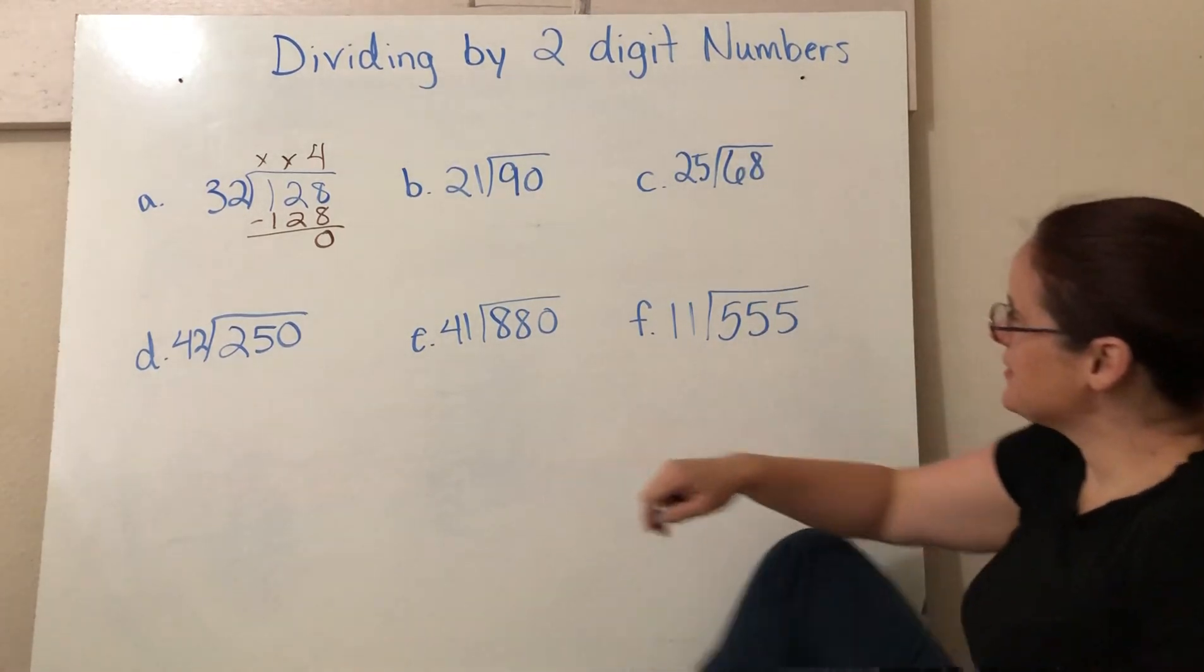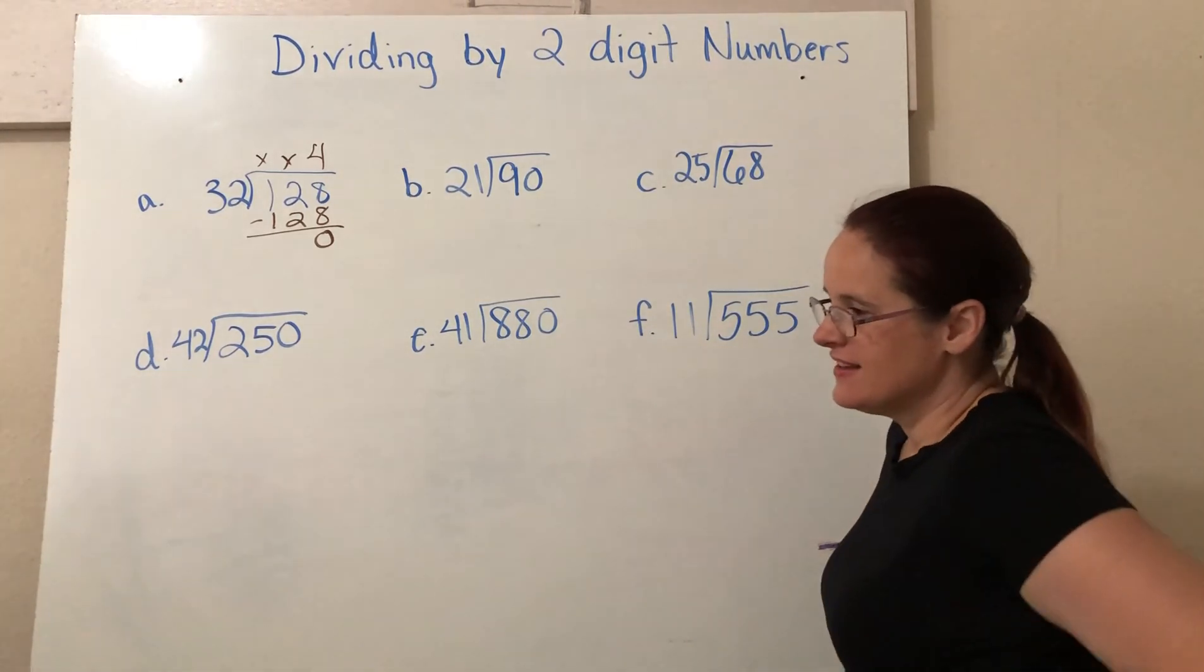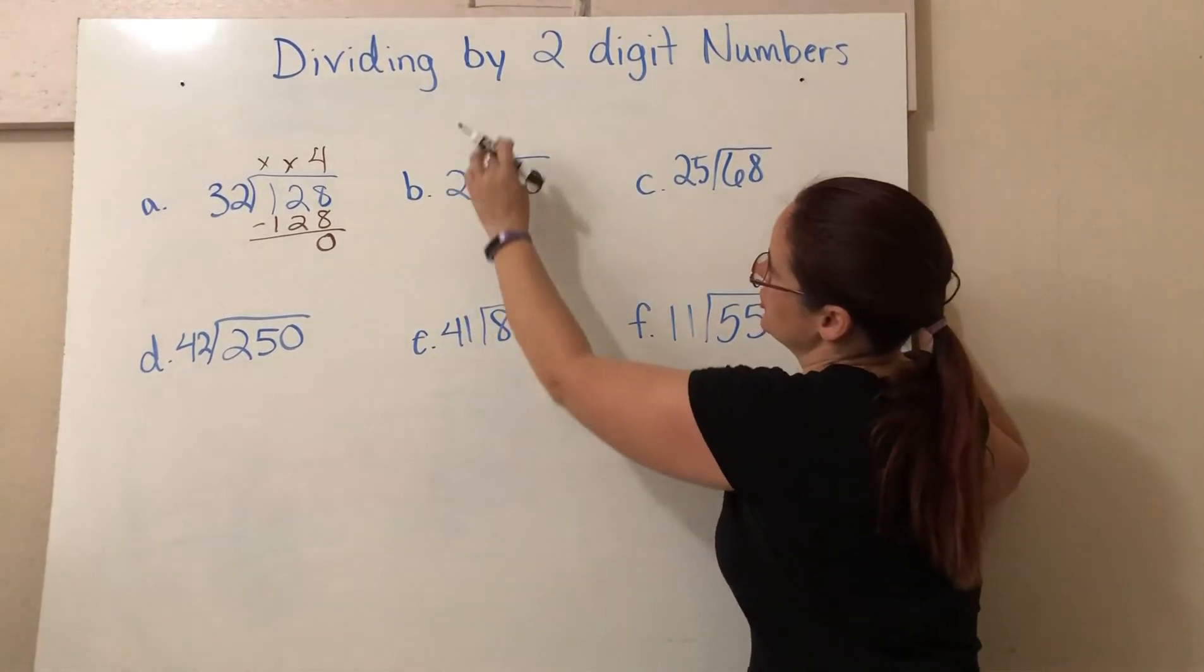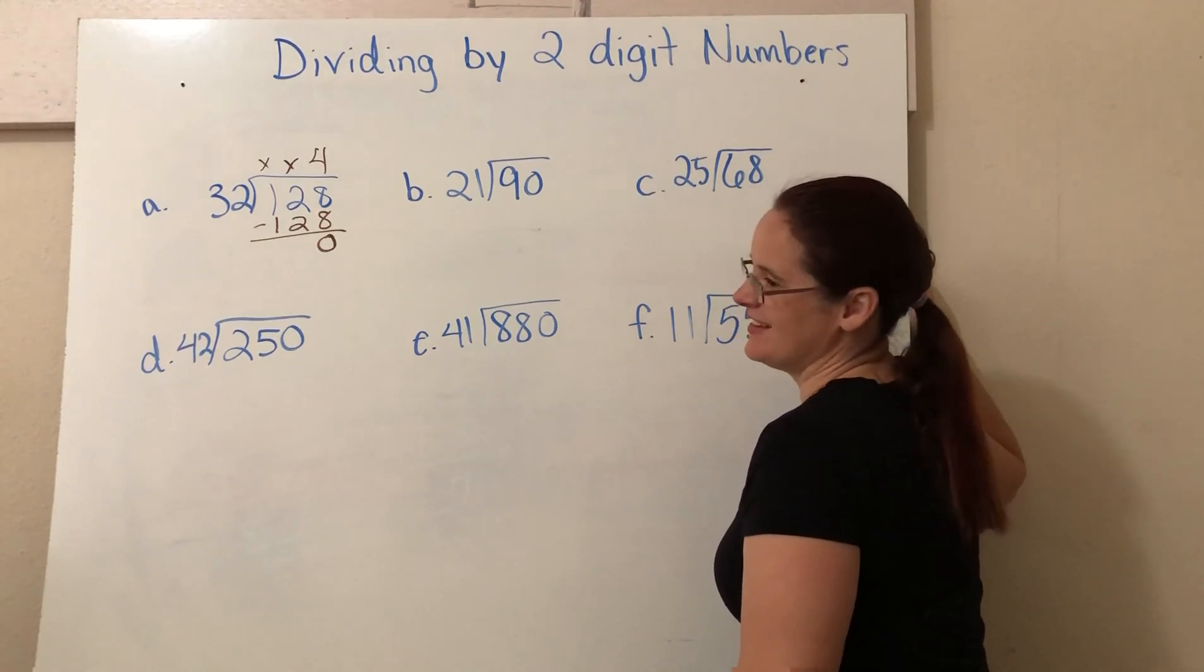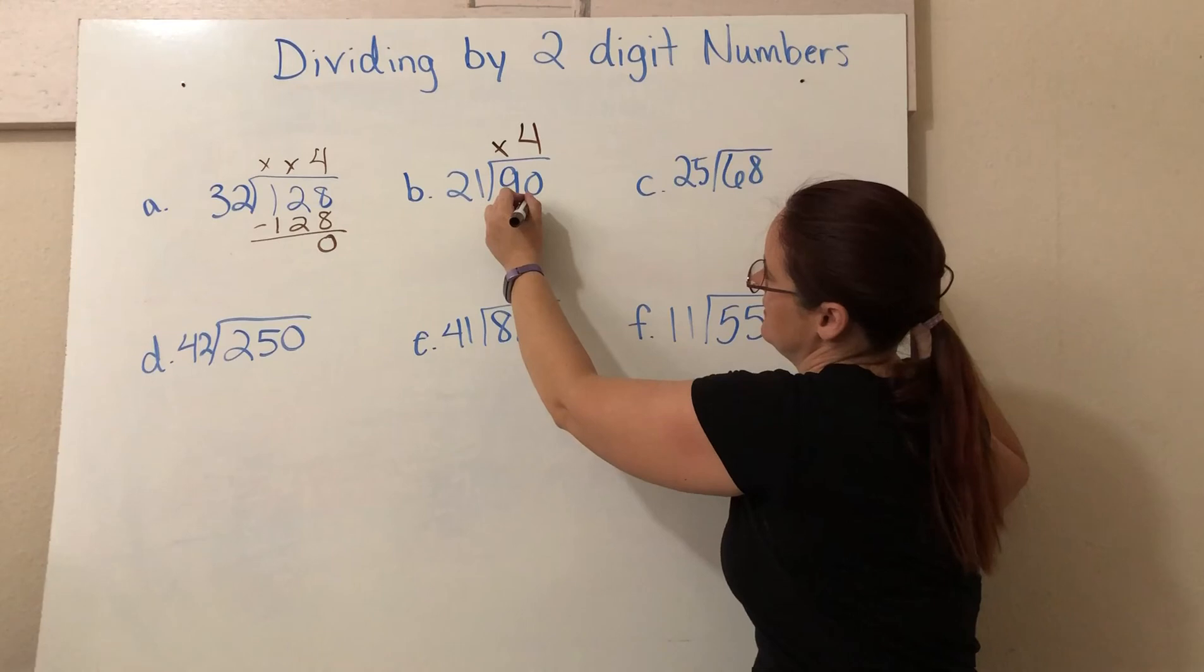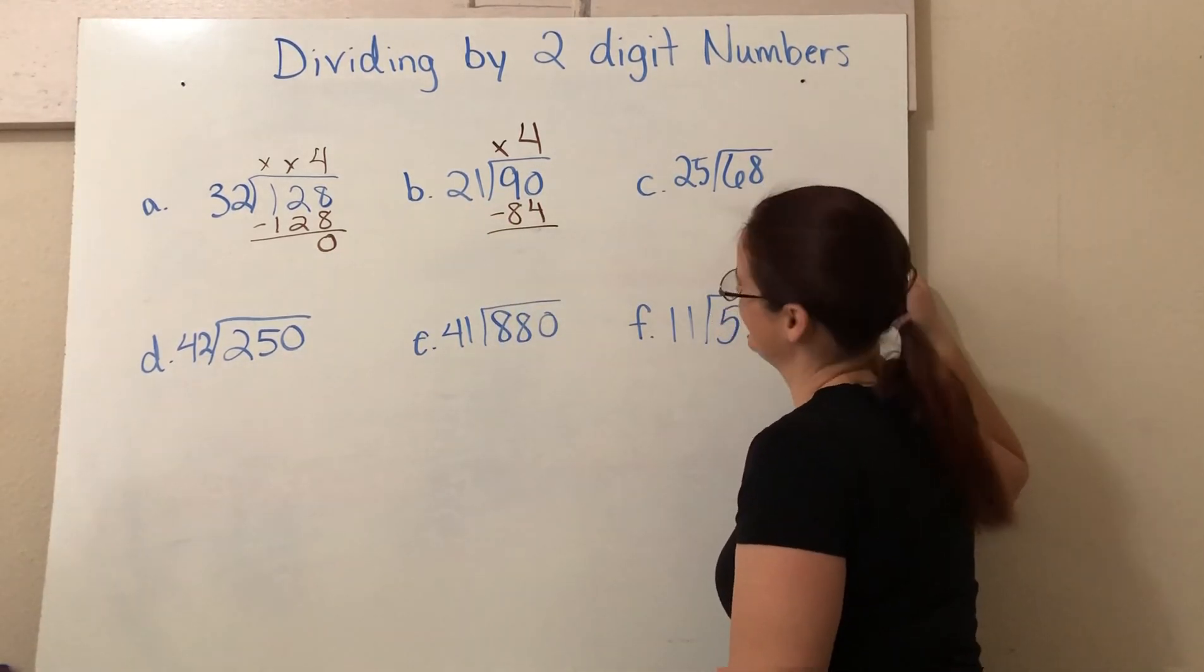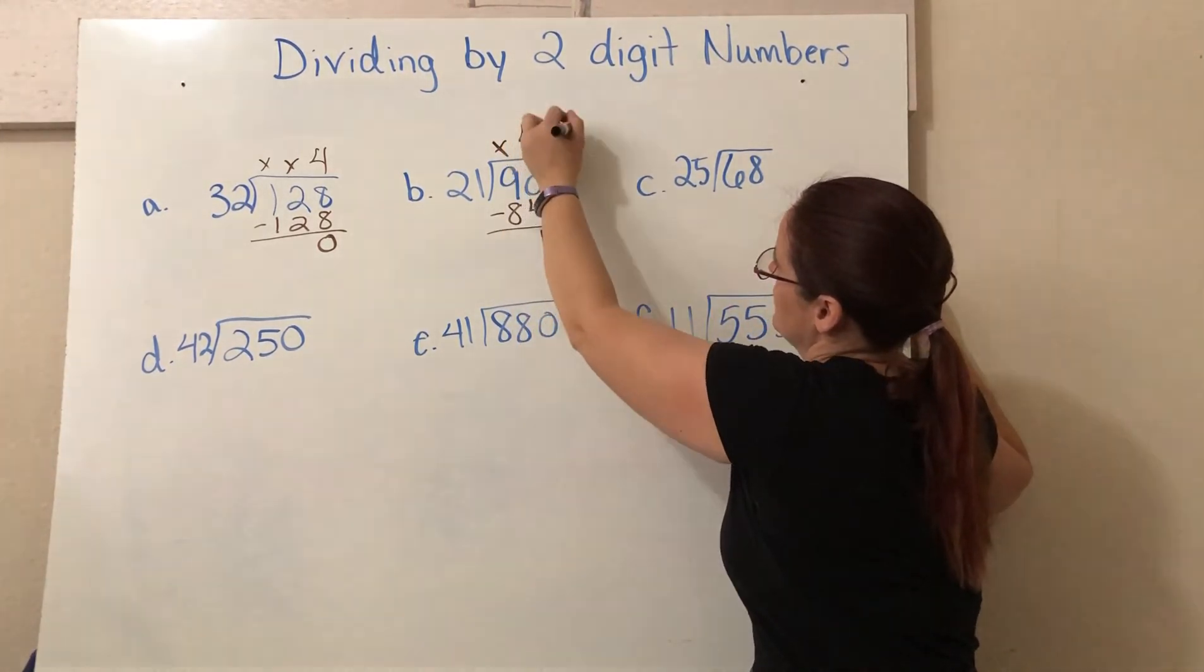All right, 21 into 90 here. How many times would 20 go into 90? It would go in four times. So should I put my four here? Why not? Because that's where the nine is, so you need to put it over the zero. 21 doesn't go into 9, but it might go into 90 about four times. So four times one is four. And four times two? Is eight. And we subtract. That is six. So four, remainder six.